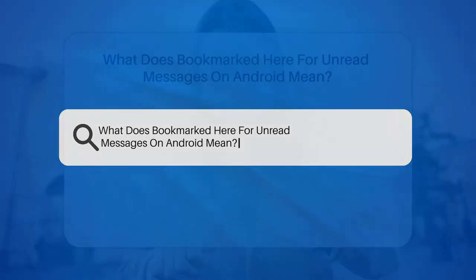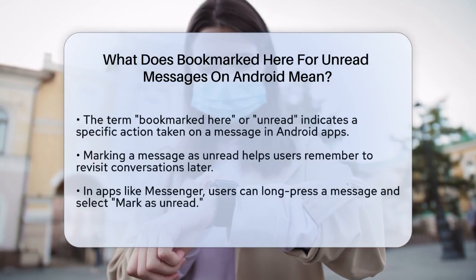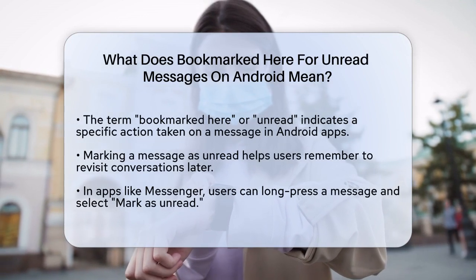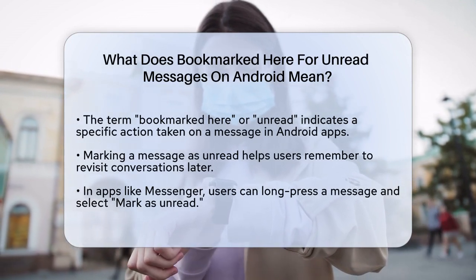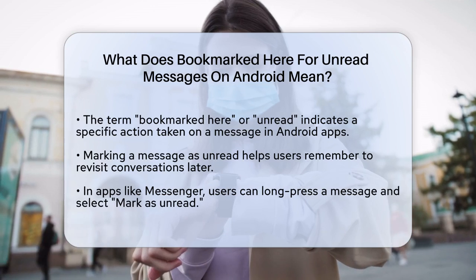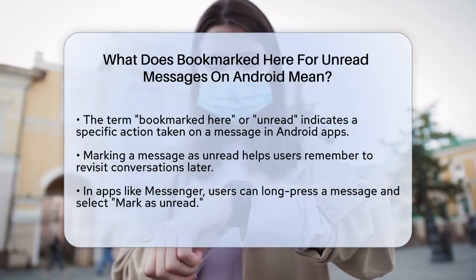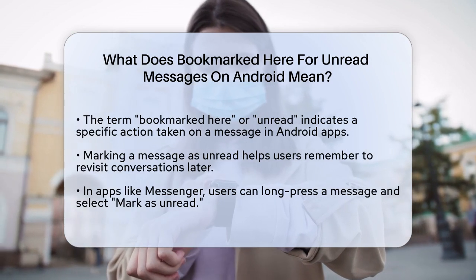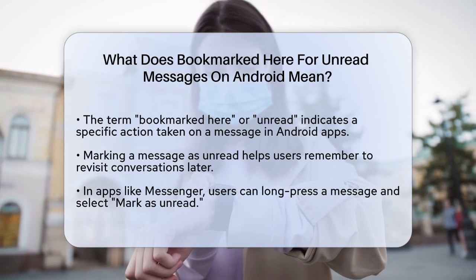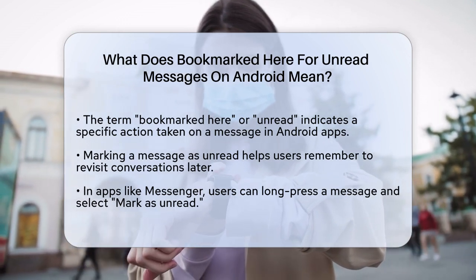What does 'bookmarked here' for unread messages on Android mean? If you have ever wondered what it means when a message is bookmarked or marked as unread on your Android device, you are not alone. This feature can be really helpful, so let us break it down. When you see a message marked as bookmarked or unread on your Android, it usually means you have taken a specific action to keep that message prominent.